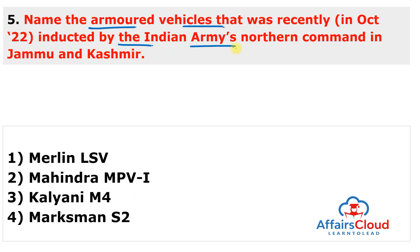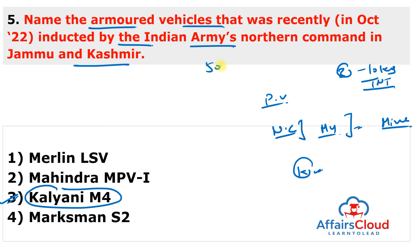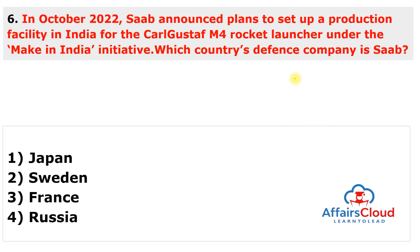DRDO tested three remotely operated unmanned weaponized boats at Bama Akshadham in Pune, Maharashtra, with no man on the vessel. The next question: name the armored vehicle recently inducted by the Indian Army's Northern Command in Jammu and Kashmir. The answer is Kalyani M4. The Indian Army's Northern Command inducted the Kalyani M4, an indigenous all-terrain high-mobility combat troop carrier with armor and mine protection, manufactured by Kalyani Group Bharat Forge Limited. The vehicle can withstand three 10 kg TNT charges under the wheels and a 150 kg IED blast on one side. TNT stands for Trinitrotoluene and IED stands for Improvised Explosive Device.